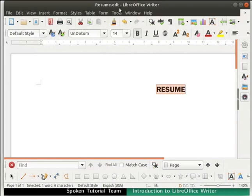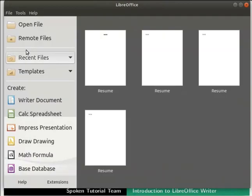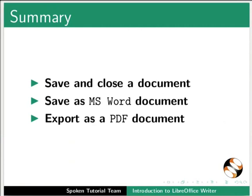Let us close the document now. Click on the File menu in the menu bar and then click on the Close option. This brings us to the end of this tutorial. Let us summarize. In this tutorial we learned about LibreOffice Writer, various toolbars, how to open a new and existing document, to save and close a document in Writer, to save as MS Word document, and to export as a PDF document.